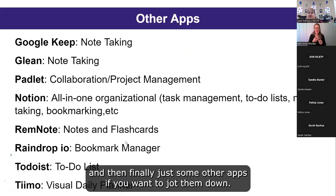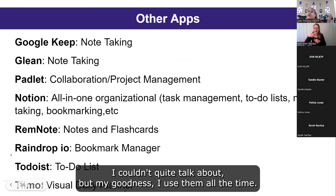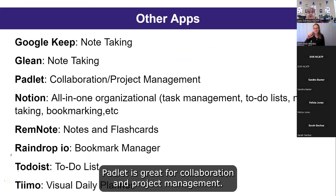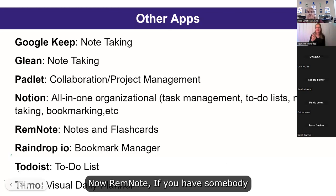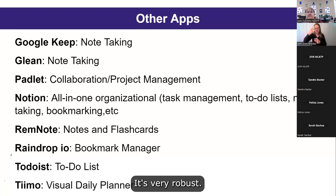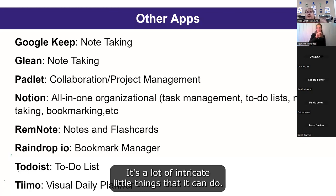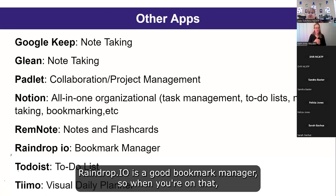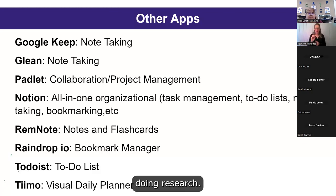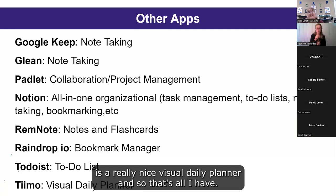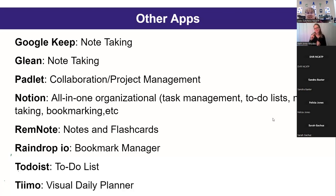Some additional apps I didn't have time to cover but use all the time: Google Keep, Glean, Padlet — great for collaboration and project management — Notion, and RemNote. Note: if someone has cognitive issues, I would not recommend RemNote — it's very robust with a lot of intricate features. Raindrop.io is a good bookmark manager for research. There's also another to-do list app called To Do List, and Timo is a really nice visual daily planner.